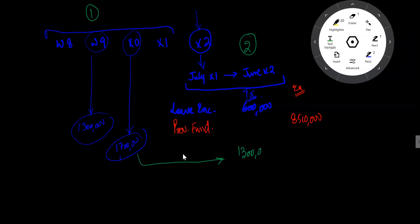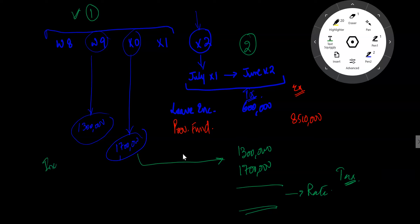Under one option, we will calculate the taxable income, then choose the rate of tax to apply, and work out which option results in lower tax. We will look at taxable income for W9 and X0 separately. If the income is higher, the tax will be higher. We need to determine how much income falls in each of those years.